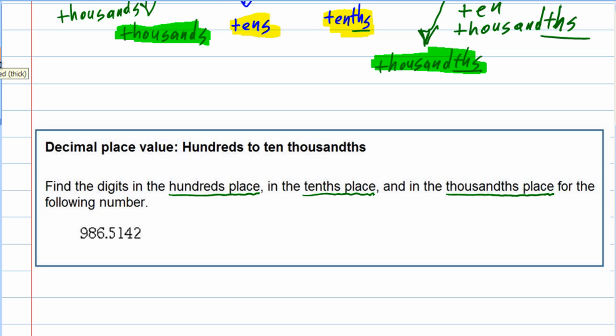The first one: hundreds does not have the THS, so that's going to be on the left-hand side. Our number here is 986.5142, so the nine is in the hundreds place. For the tenths, that does have the THS, so I know I'm on the right-hand side of the decimal. There is no ones, so the very first one is tenths. That's our five.